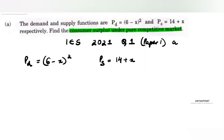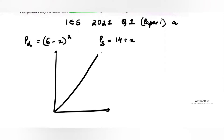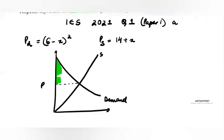Consumer surplus is defined as follows: if you have a supply curve and a demand curve, wherever demand and supply meet you have a price. The area below the demand curve and above the price is the consumer surplus. The area below the price and above the supply curve is the producer surplus.